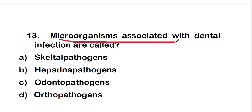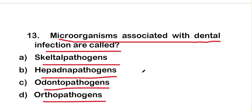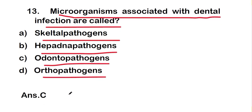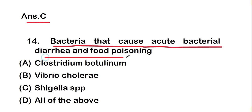The next question is: microorganisms associated with dental infection are called what? The options are skeletal pathogens, hepadna pathogens, odontopathogens, or orthopathogens. The right answer is option C — odontopathogens — so microorganisms associated with dental infection are called odontopathogens.